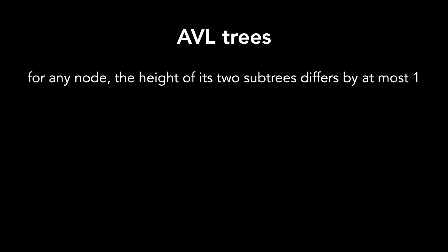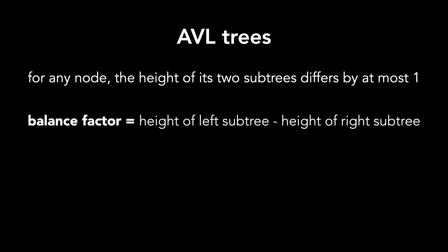We call this the balance factor, which is found by taking the height of the left subtree and subtracting the height of the right subtree. This means that valid values of balance factor are negative one, zero, and one.